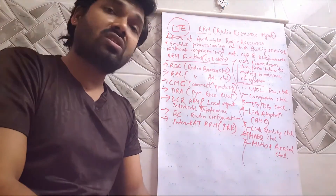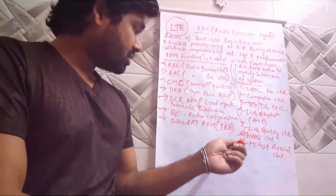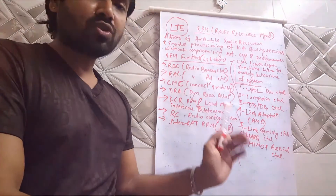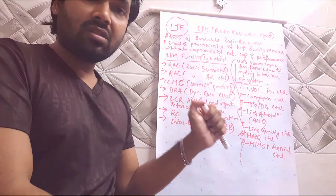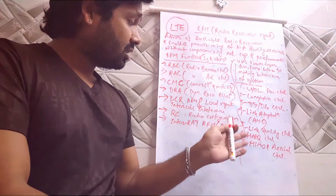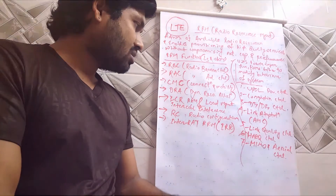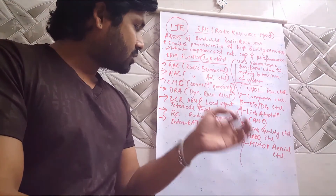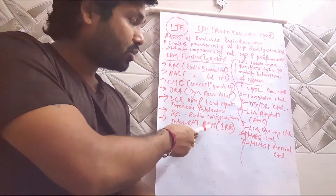The sixth important function of RRM is RC, or Resource Configuration — configuring the resources. The seventh and last important function is Inter-RAT RRM, or IRR, which handles everything related to inter-radio access technology such as 2G, 3G, or CDMA — including any reselections, handovers, or other functions with respect to other radio access technologies.